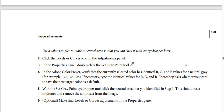Step 2: click the levels or curves icon in the adjustments panel. Step 3: in the properties panel, double-click the set gray point tool. Step 4: in the Adobe color picker, verify that the currently selected color has identical R, G, and B values for a natural gray — for example, 128, 128, 128. If necessary, type the identical values for R, G, and B. Photoshop asks whether you want to save the new target color as a default.